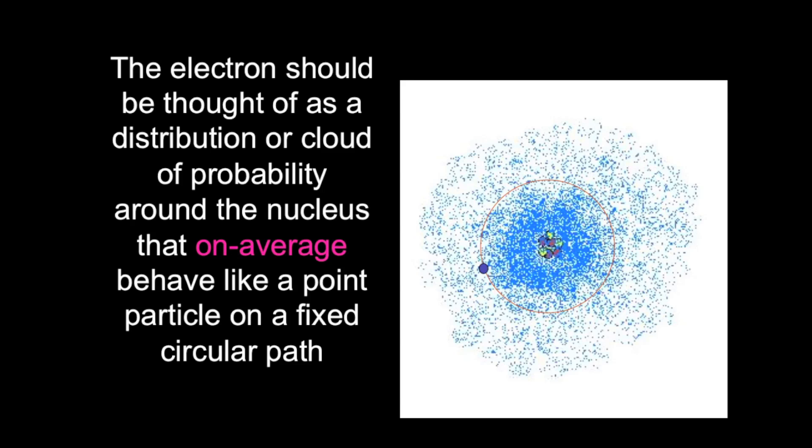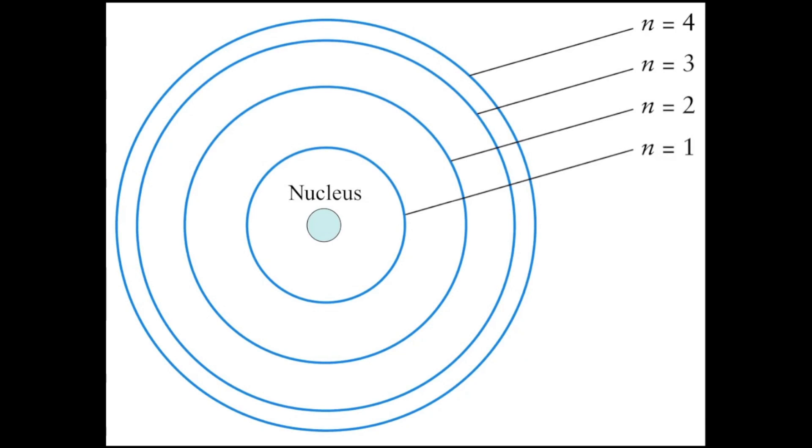The closer into the nucleus, the lower the energy an electron will have. The further out from the nucleus, the more the energy an electron needs in order to orbit at that distance. And so, I'll often show you figures that look like this, where we've got the nucleus in the center of the atom, and then circles representing different electron orbits.